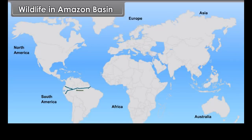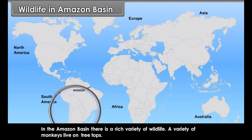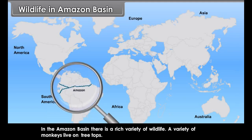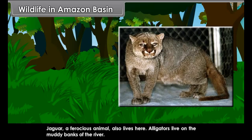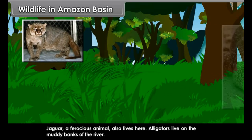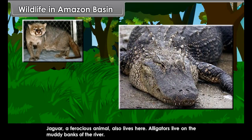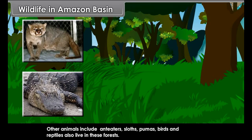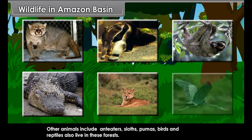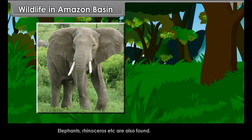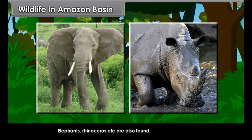In the Amazon Basin, there is a rich variety of wildlife. A variety of monkeys live on treetops. Jaguar, a ferocious animal, also lives here. Alligators live on the muddy banks of the river. Other animals include ant-eaters, sloths, pumas, birds, and reptiles. Elephants and rhinoceros are also found in these forests.